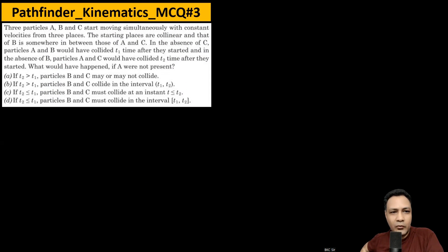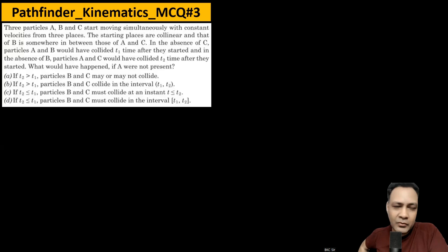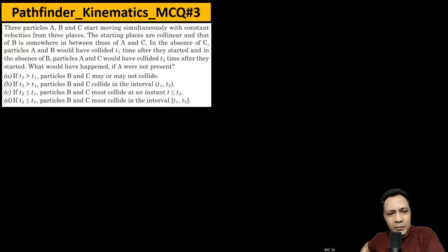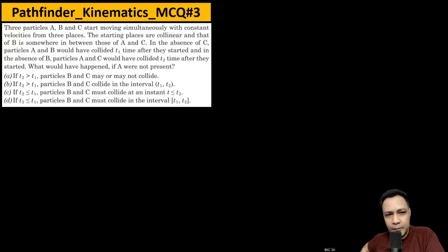Let's look at a very good question on relative motion from Pathfinder Kinematics — it's a multiple choice question. Based on the given information, we have to identify which of the four options are correct. The beauty of this question is that proceeding the normal way — writing equations of motion and solving them — would be very difficult due to many inequalities. So I've chosen a geometrical approach to arrive at the conclusions.